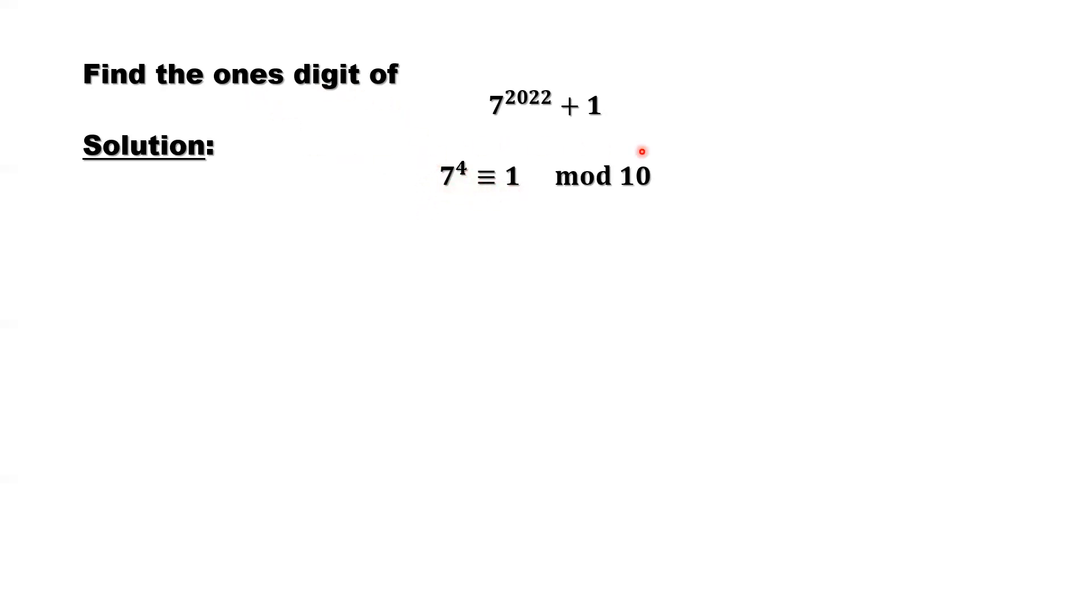This is a number theory notation. That means to find the ones digit, it is equivalent to say that this number divided by 10, we want to find the remainder. The remainder is the ones digit of this number. So this is called congruent modulo 10.